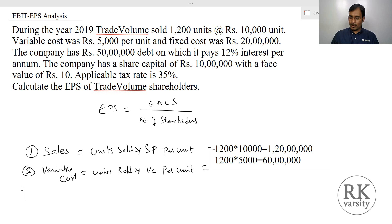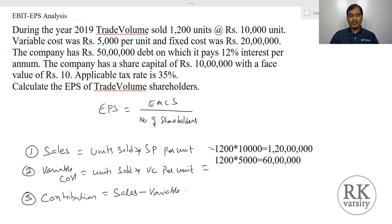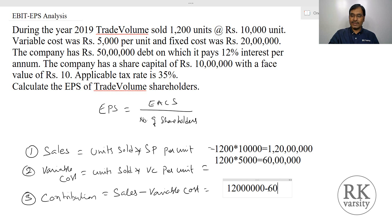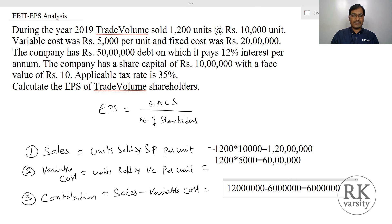Then comes contribution. Contribution equals sales minus variable cost. Sales are 1 crore 20 lakhs and variable cost is 60 lakhs. So contribution is 60 lakhs.